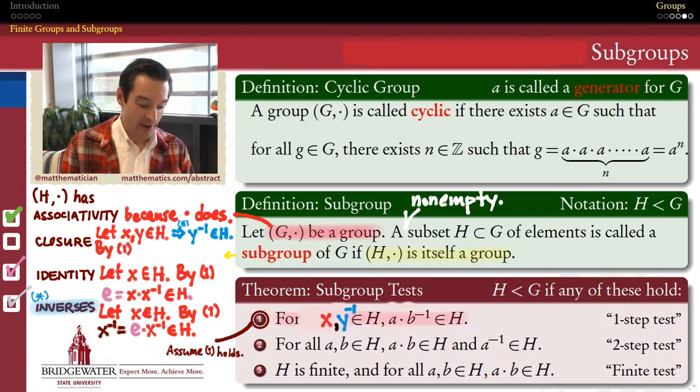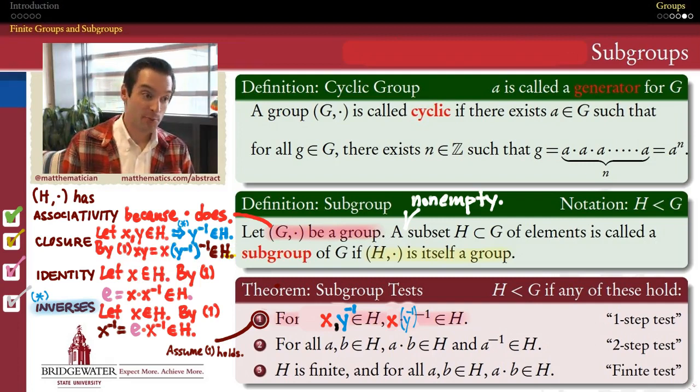So by this property, if I put an X in place of the a, a Y inverse in place of the b, then this property tells me that X times the inverse of Y inverse is guaranteed to be an element of H. But what's the inverse of Y inverse? By the uniqueness of inverses in a group, the inverse of Y inverse is in fact Y itself. And therefore, we've concluded that X times Y must belong to H. That verifies the closure property. And now we've met all four criteria for the subset H to be a group in its own right under the operation that it inherited from the group G.